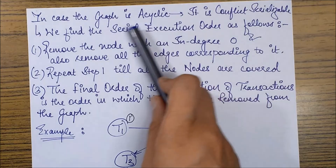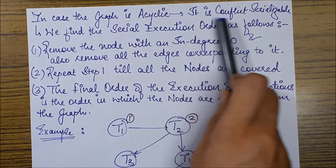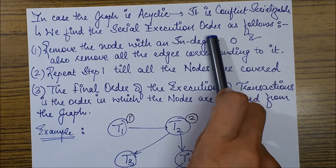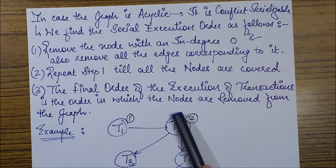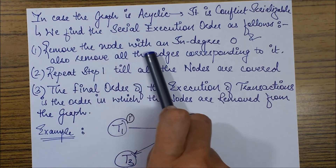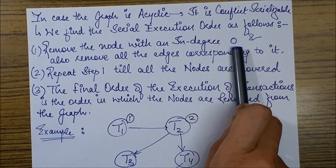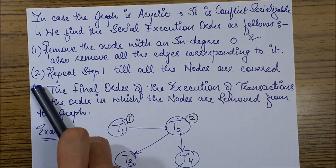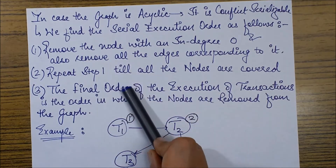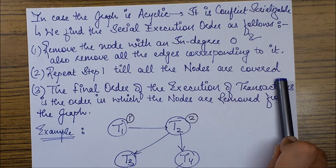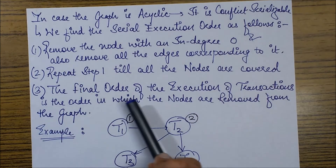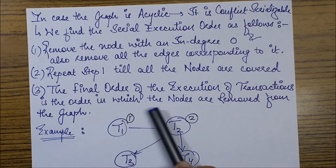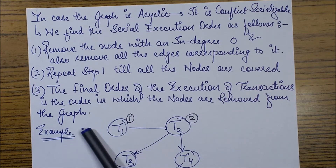To find the serial execution order when the graph is acyclic, follow these steps. First, remove the node with in-degree 0 and also remove all edges corresponding to it. Second, repeat step 1 until all nodes have been covered. Third, the final order of execution of transactions is the order in which the nodes are removed from the graph.